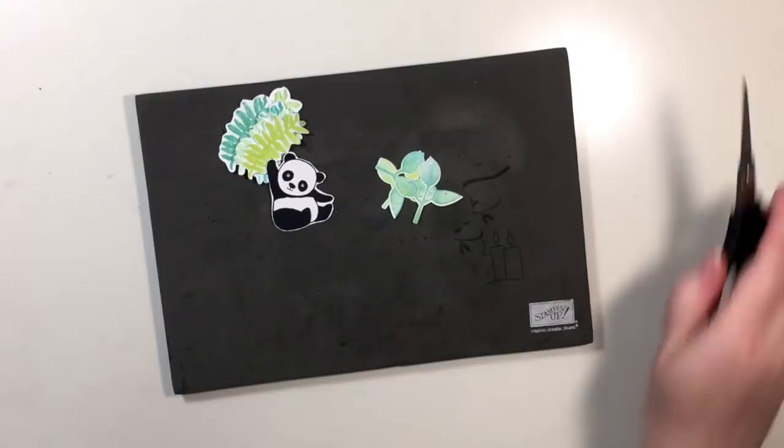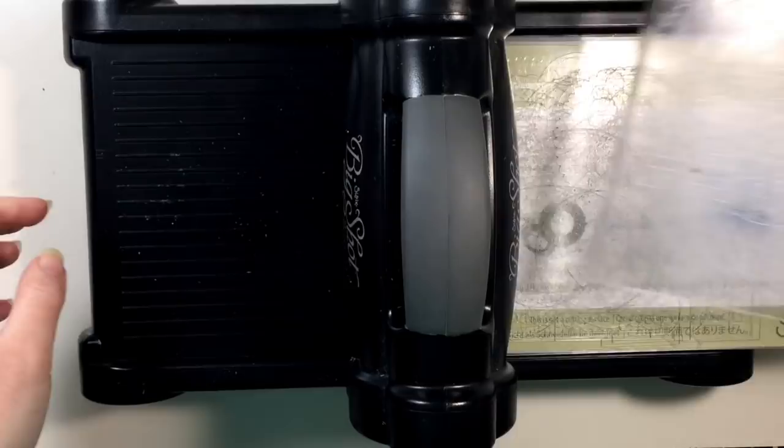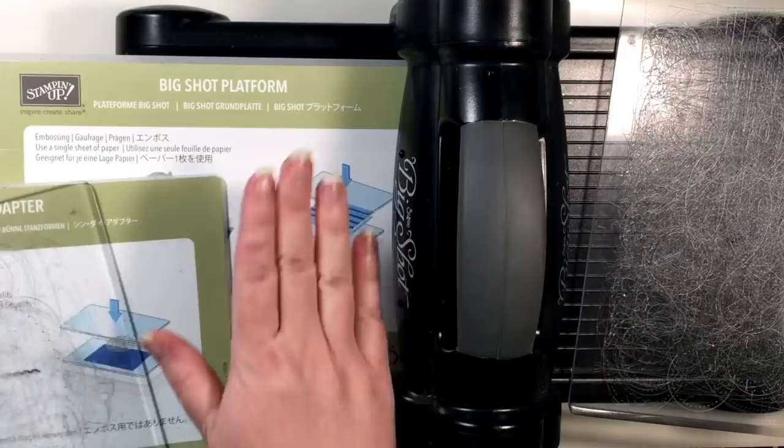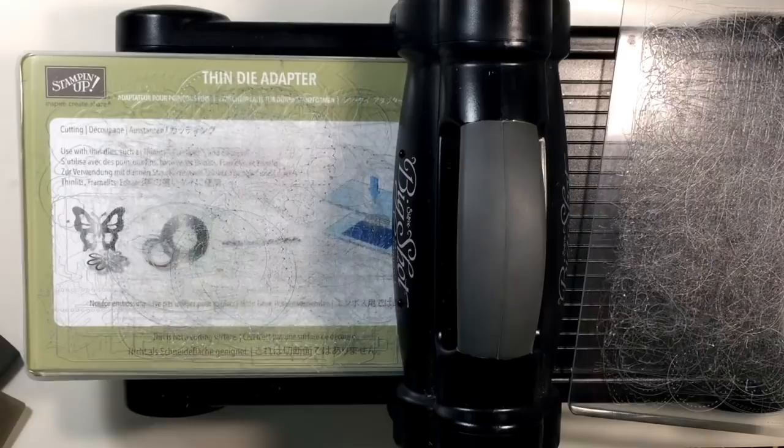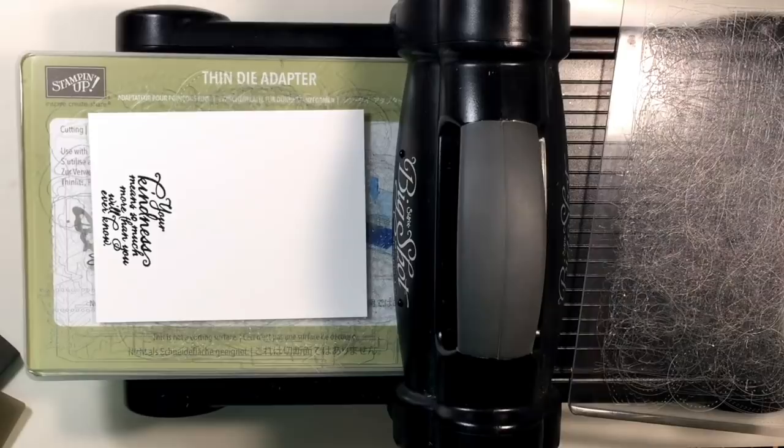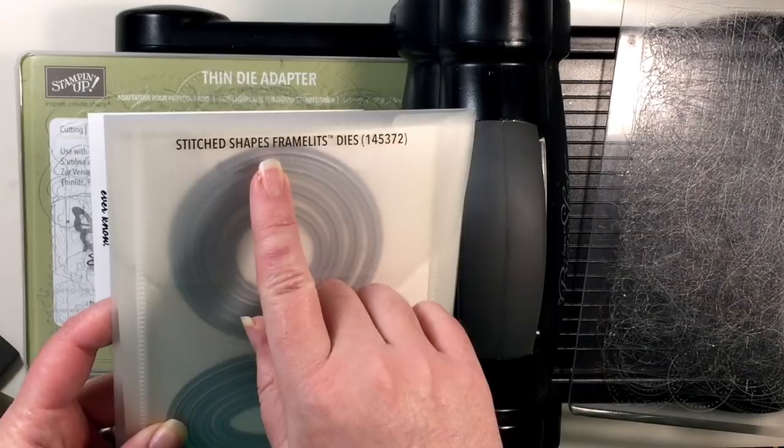Now that we have our fussy cutting done, we're going to set that aside and we're going to bring in our Big Shot so that we can cut out a circle from the front of our card mat. So I have my Big Shot platform, thin die adapter, and one cutting plate. I'm going to bring in my card mat here and you can use any circle that you have. If you have a punch that's large enough, you could use that as well. I'm choosing to use my Stitched Shapes Framelits and I'm using the largest circle.